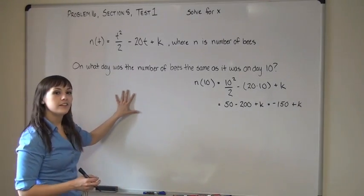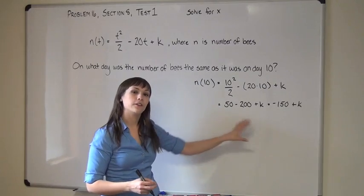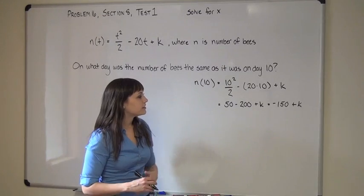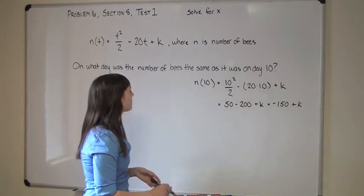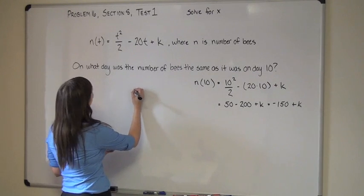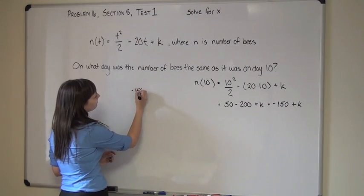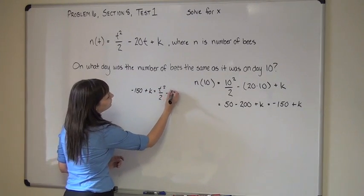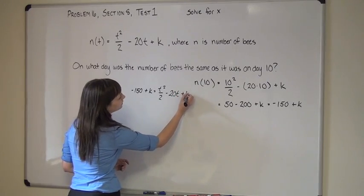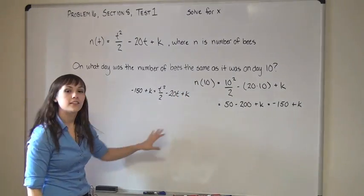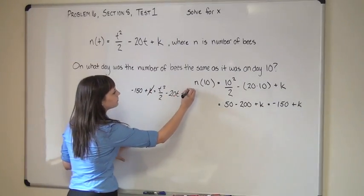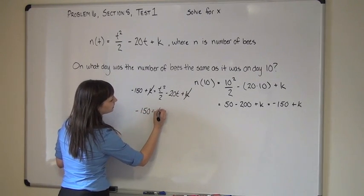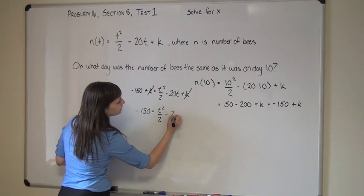Our objective is to find another t value that will give us the exact same value for n. So we're going to take our original function for n and set it equal to negative 150 plus k. If we do that, we'll get negative 150 plus k equals t squared over 2 minus 20t plus k. You'll see that the k's cancel out, so you don't even have to worry about them. Now we're left with the equation: negative 150 equals t squared over 2 minus 20t.